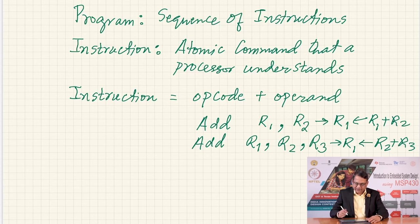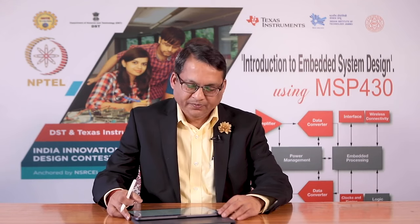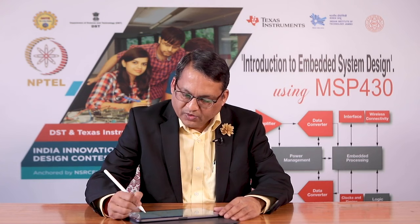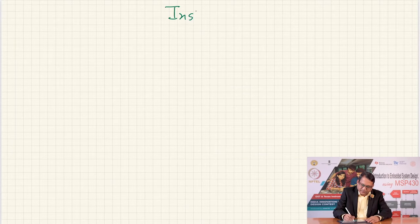The operation to be performed is described as the opcode, and what numbers it operates on is the operand part of the instruction. This is where things can take large variety, leading to different types of instruction set architectures. Before we go to that, let me classify the types of instructions. Broadly, they can be classified into four types.